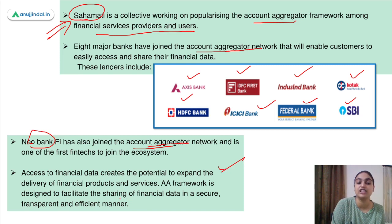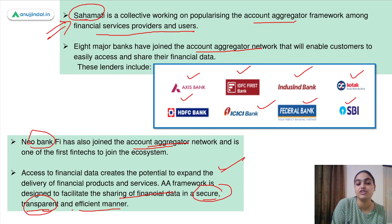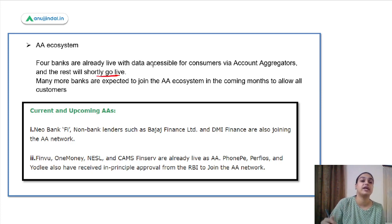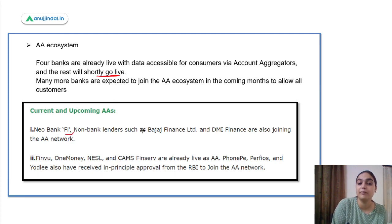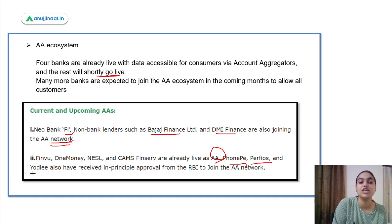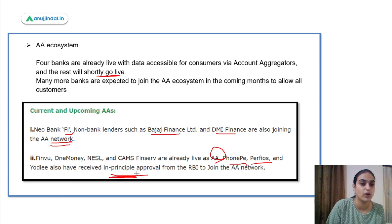This framework is designed to facilitate sharing of financial data in a secure, transparent, and efficient manner. Four banks have already gone live and the remaining will go live shortly. Many more banks are expected to join this framework in the near future. The neobank Fi, non-bank lenders like Bajaj Finance and DMI Finance are also joining this network. Finvu, One Money, NESL, and CAMSfinserv are already live as account aggregators. PhonePe, Perfios, and Yodlee have also received in-principle approval from RBI to join this network.